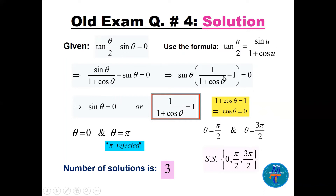For the bracket equal to zero: 1/(1 + cos θ) = 1, so 1 + cos θ = 1, meaning cos θ = 0. This gives θ = π/2 or θ = 3π/2. However, substituting θ = π into the original equation gives tan(π/2), which is undefined — so π is rejected. The valid solutions are θ = 0, π/2, and 3π/2, giving 3 solutions.